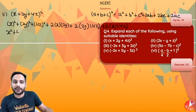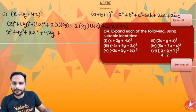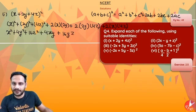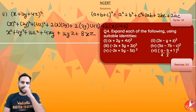So it will be equal to: x² + 4y² + 16z². Now 2×2 = 4, so 4xy; 2×2×4 = 16, so 16yz; and 2×4 = 8, so 8xz. This is the expansion for the first part.